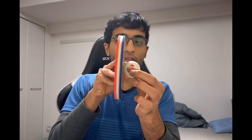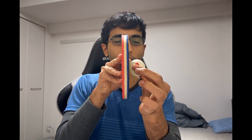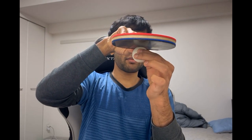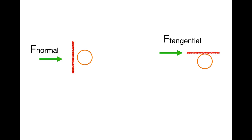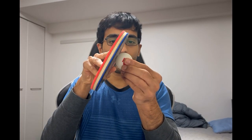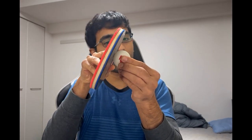Now let's see what happens when you actually bring the bat into the picture. When you get your bat involved, the force you apply is actually given by the speed of the racket at which you are hitting the ball. For example, this would be an example of a racket hitting with the normal force, this would be an example of the racket hitting with a tangential force, and something like this is hitting with kind of a mix of the two.